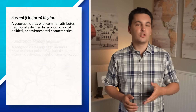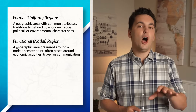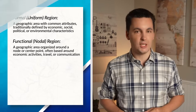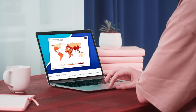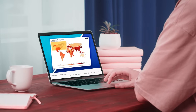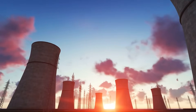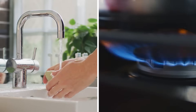The next type of region is a functional region, which is a geographic area organized around a node or center point, often based around a specific economic activity, travel, or communication. For example, the electricity you use to charge your phone, laptop, or run your computer comes from a power plant that provides electricity for a set region. If you were to leave that region, you could still get power, but it would come from a different power plant. The same goes for other utilities such as water and natural gas.